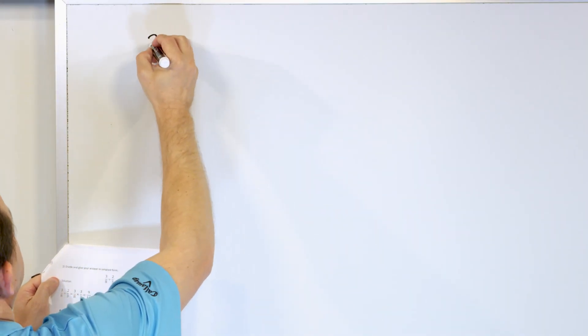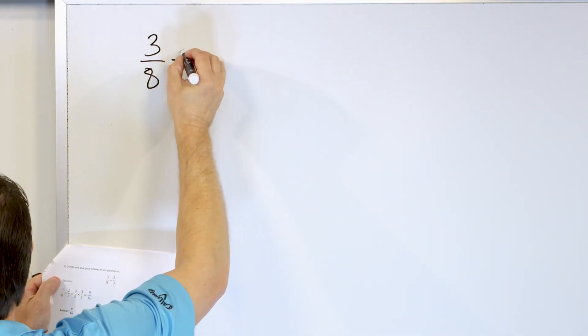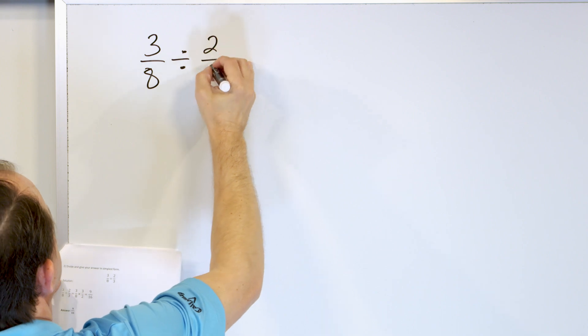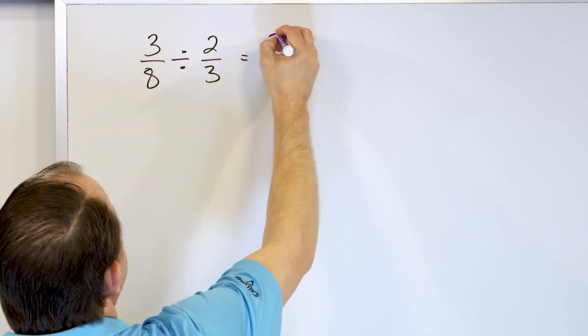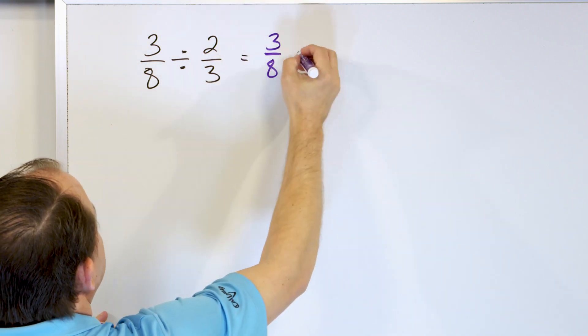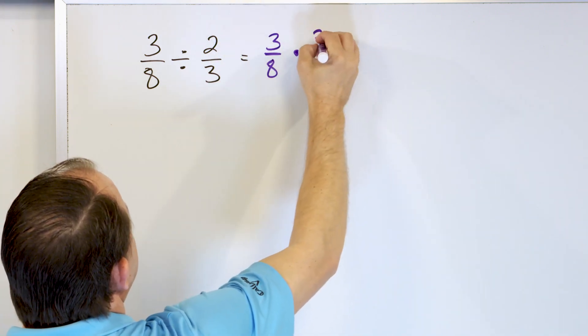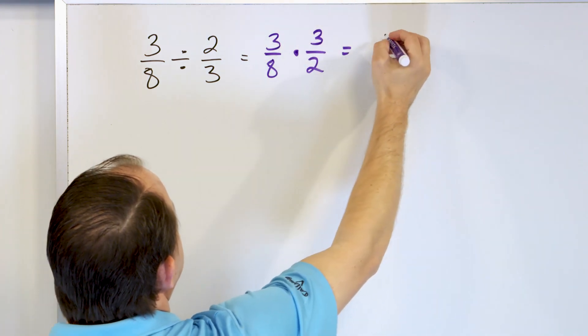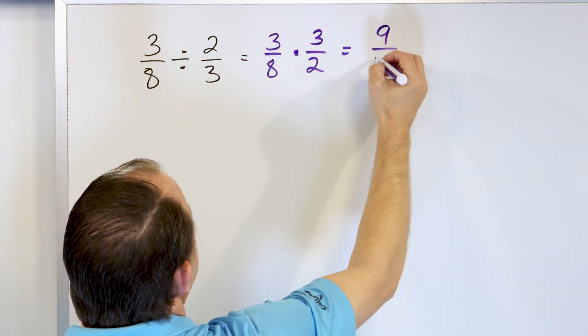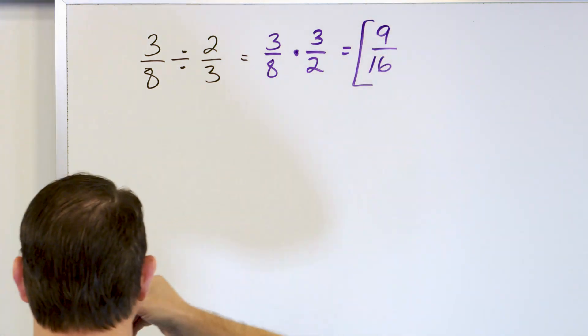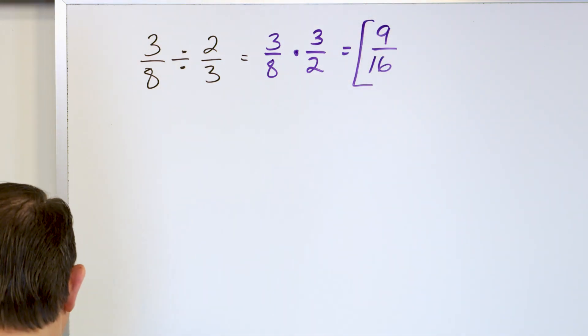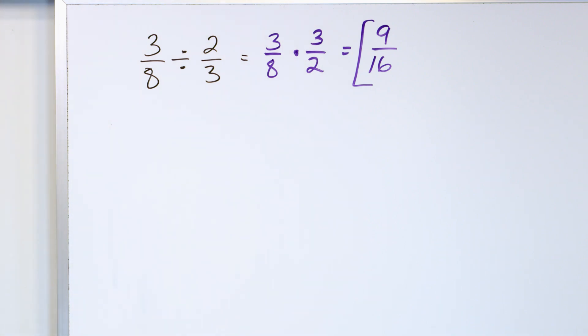What about 3/8 divided by 2/3? Same thing. Keep the first fraction, 3/8, change to multiplication, flip the second fraction, 3/2. 3 times 3 on the top is 9 and 8 times 2 is 16. So you get 9/16. We cannot simplify this any further. So that is the final answer. Sometimes you simplify, sometimes you don't.